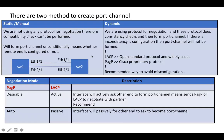There are two ways to create a port channel between switch one and switch two. One way is manual — using ON mode — where we are not going to negotiate with the remote end and not check whether the remote end is compatible. If port channel is configured using ON mode on switch one, it will come up unconditionally, even without checking whether it is configured on switch two, which is not ideal.